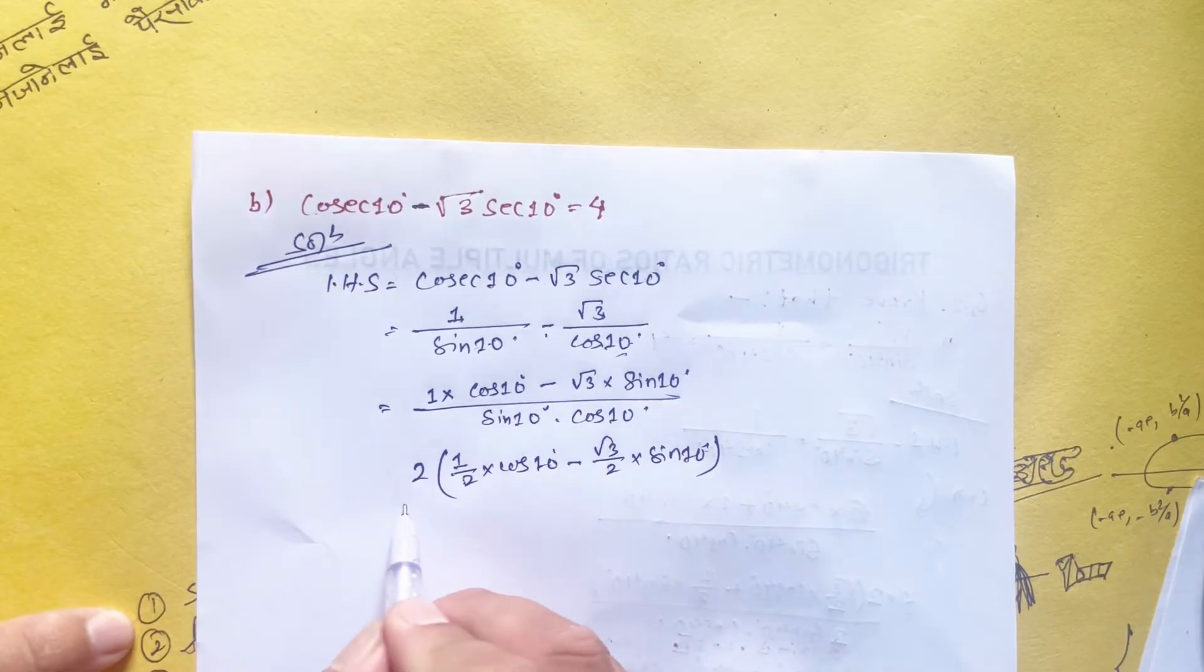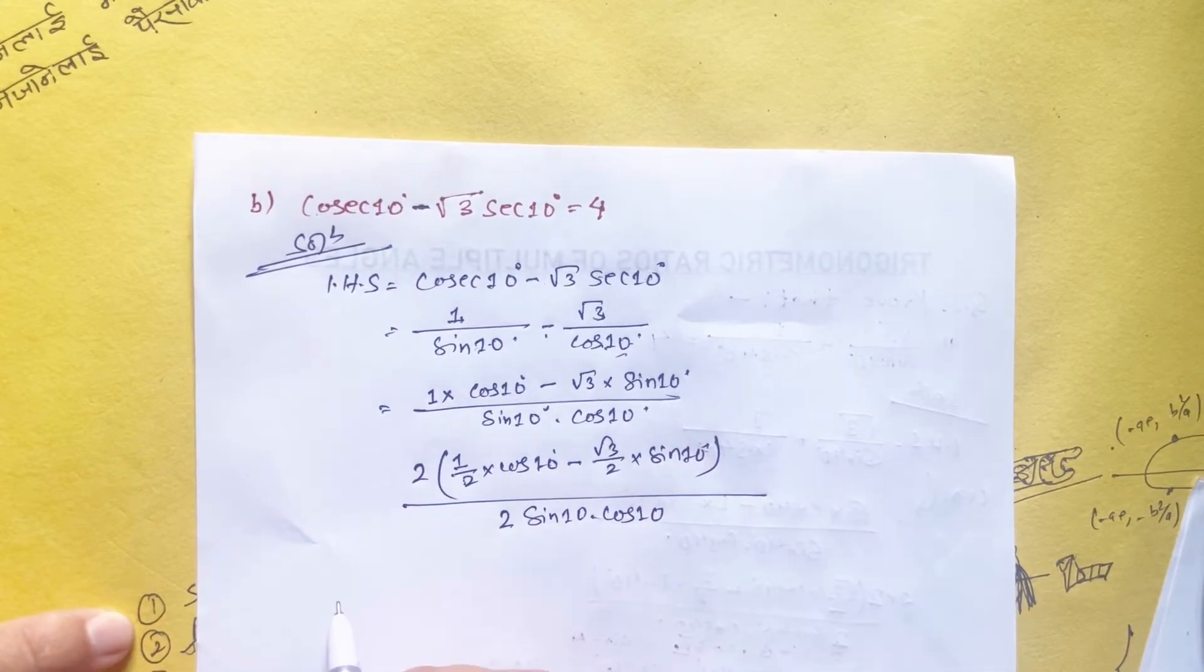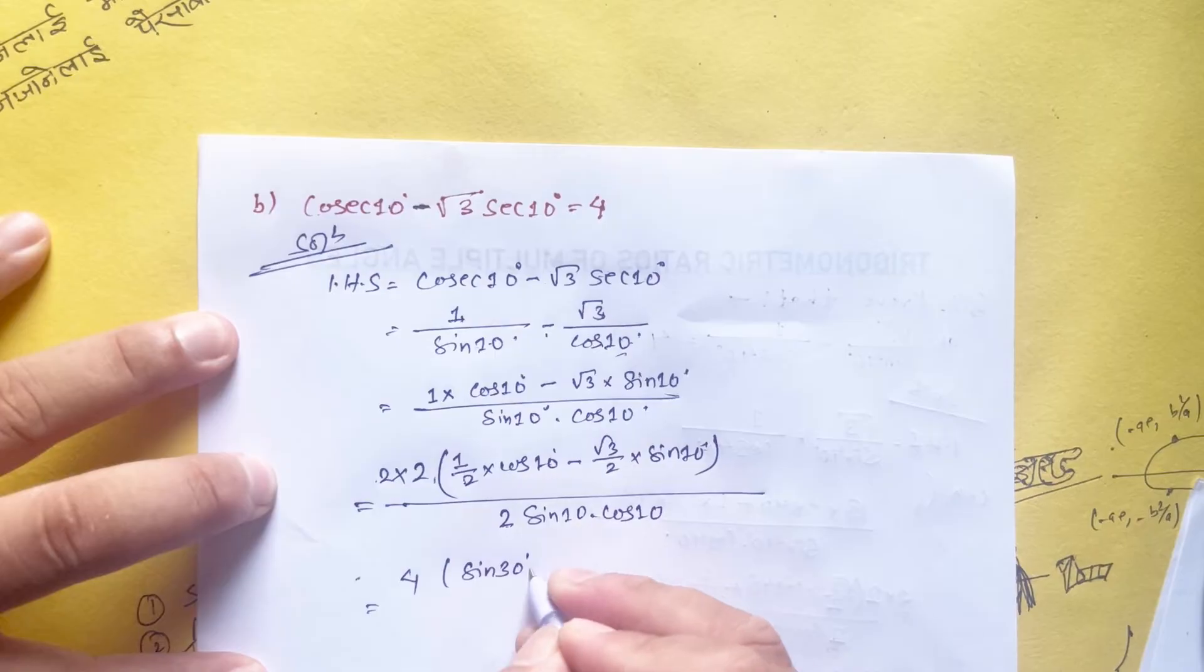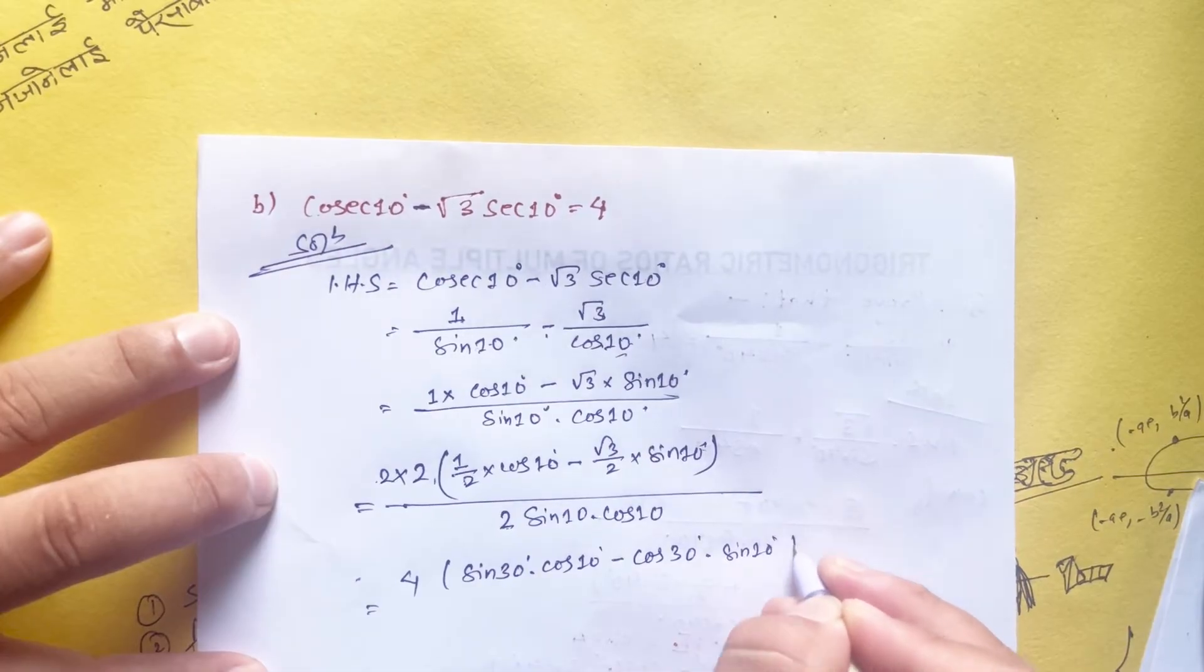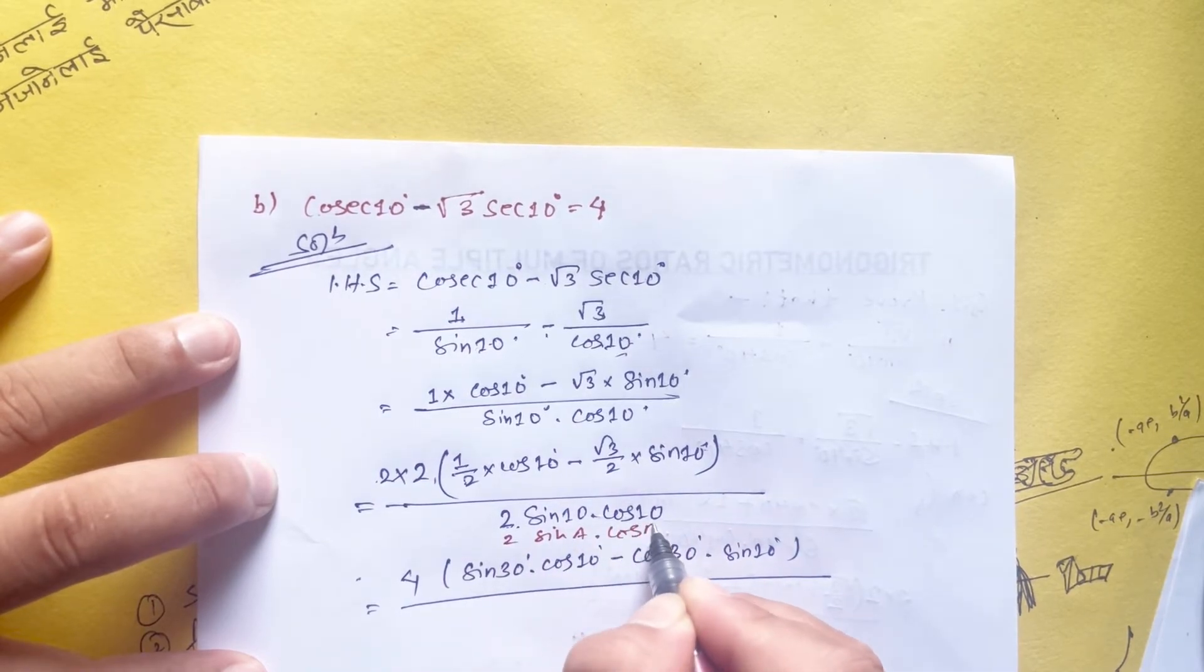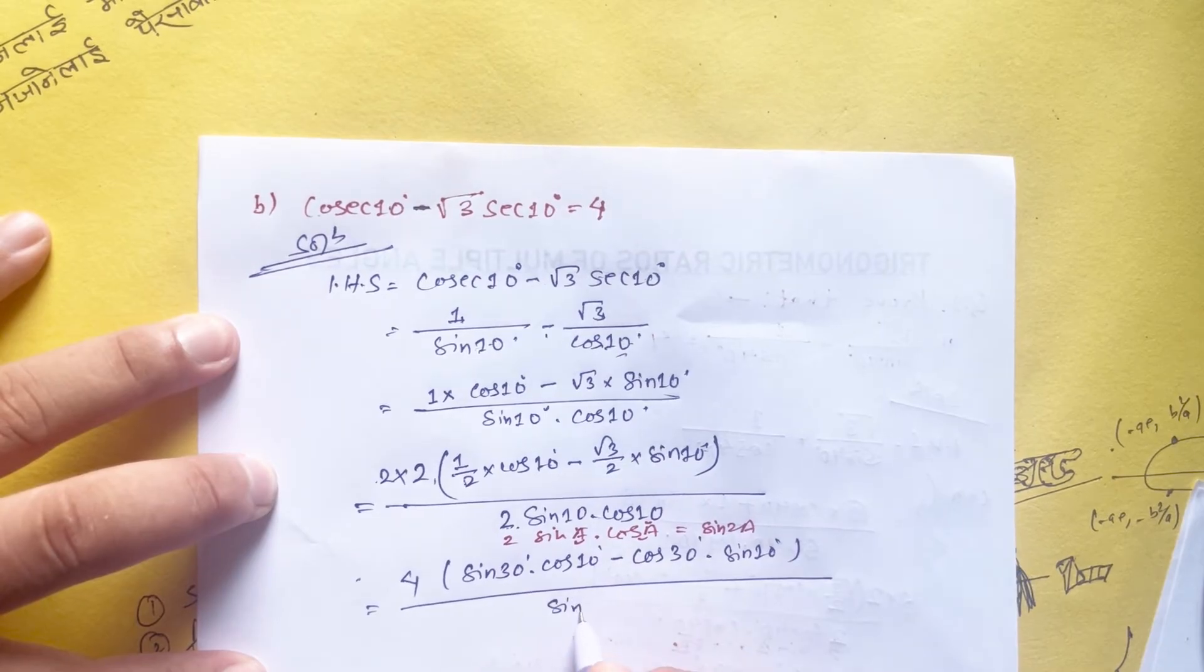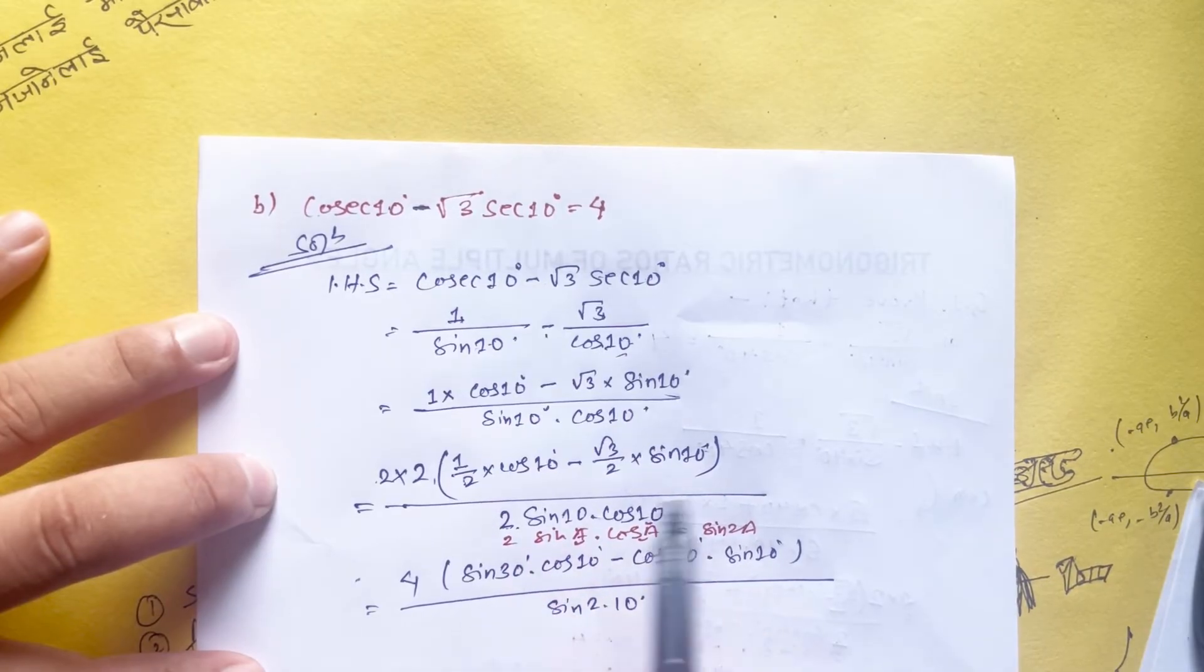Factoring out 2 from the numerator, we get 2 times (1/2 cos 10 minus √3/2 sin 10) over sin 10 cos 10. Since 1/2 equals sin 30 degree and √3/2 equals cos 30 degree, and the denominator becomes sin 20 using the 2 sin a cos a formula.